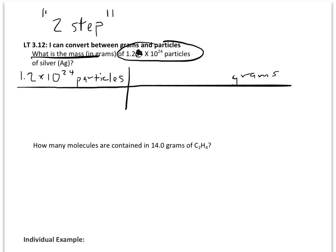Our first conversion factor, we know we're going to have to have particles on the bottom in order for our units to cancel. And ideally, we would like to have grams on top, but as we know, we don't have a conversion factor directly to go from particles to grams. So first, we will go to moles. And we know that if we have 1 mole, that's the same as 6 times 10 to the 23rd particles.